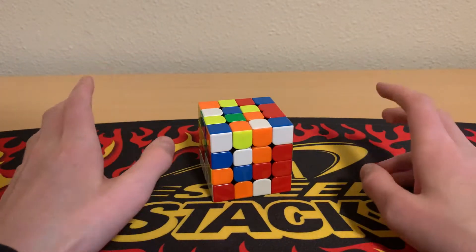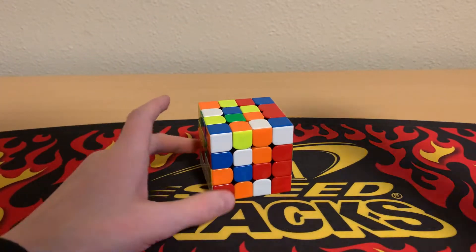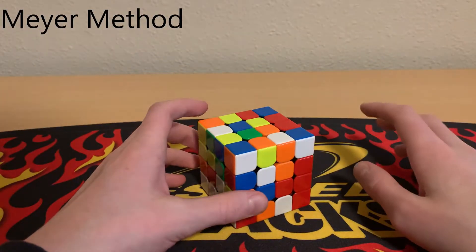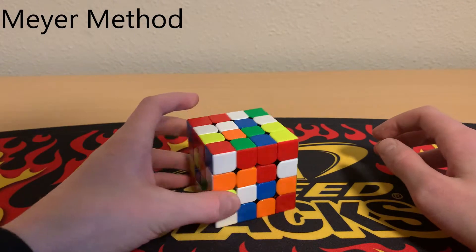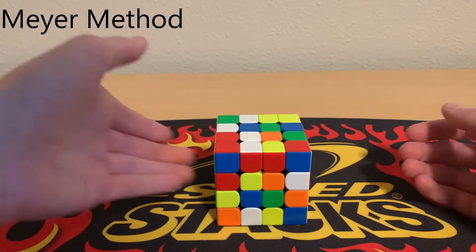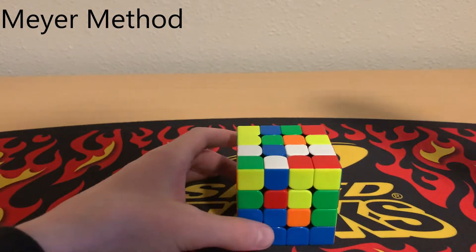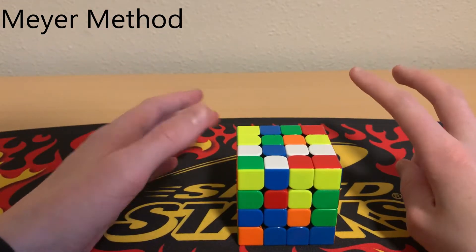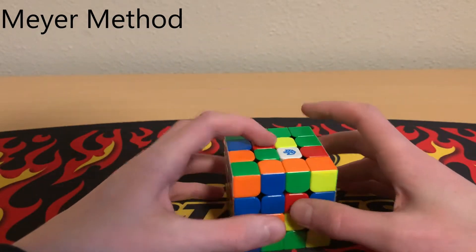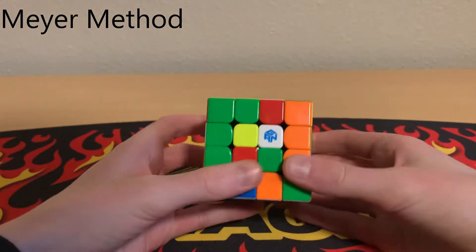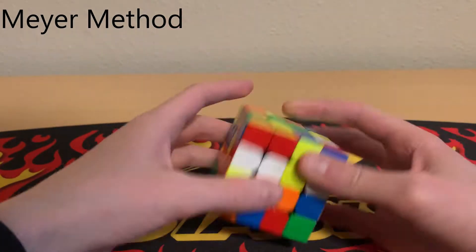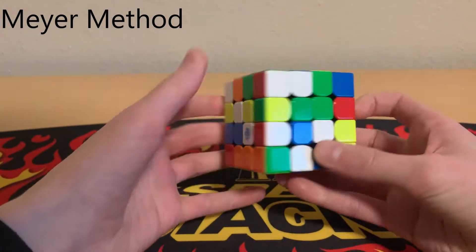Alright, so the first real way to do Roux on 4x4 is called the Meyer Method. In Meyer, if you're x2y color neutral on 3x3, that means you can start with orange, red, blue, or green first block. We're going to solve two of those centers first, so opposite centers. I usually solve red and orange, just for consistency's sake on 4x4. Get all the reds on one side and then get the orange centers on another side.